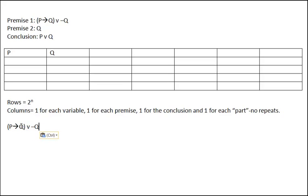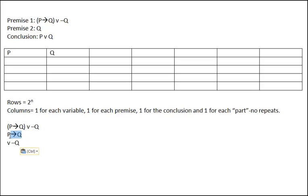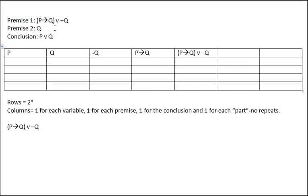Premise one consists of the following parts: to break it down piece by piece, we've got 'if p then q' and 'or not q.' So we put all those parts up there. For convenience, we put not q close to the q column, then we put up 'if p then q,' then the whole premise. Then we can put the conclusion, p or q, up there as well.